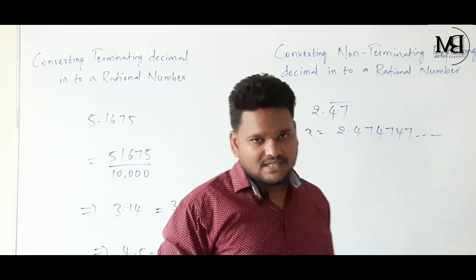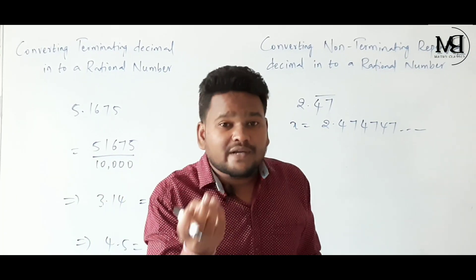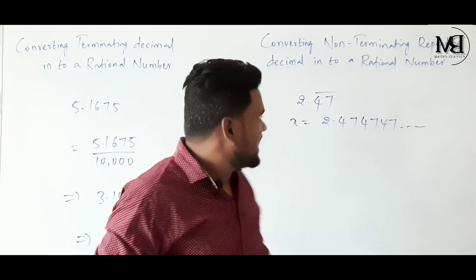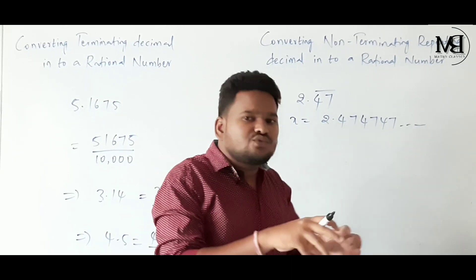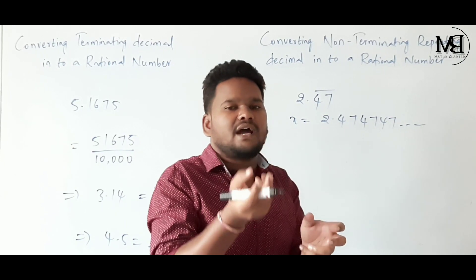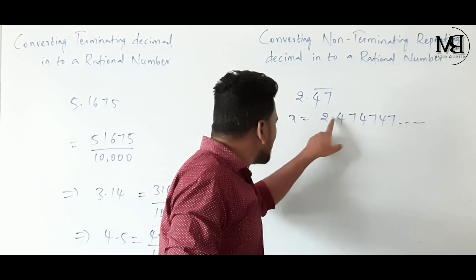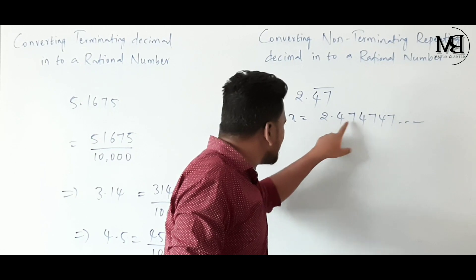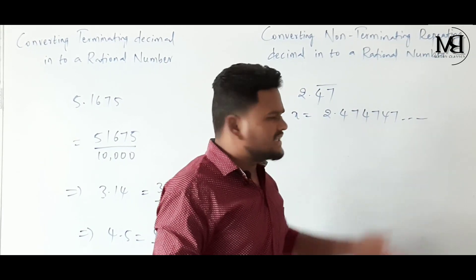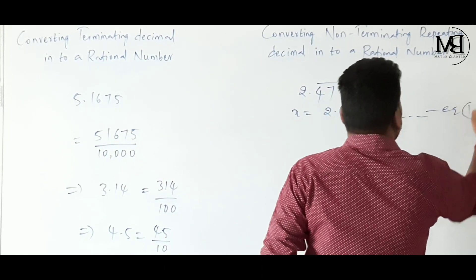Point number 1: we have to keep the decimal point before the digits which are repeated. Here 47 is going to be repeated, so before 47 we keep the decimal point. Observing this equation, the decimal point is already before the repeated digits, so we consider X = 2.47̄ as equation 1.